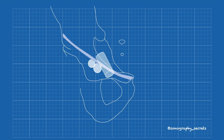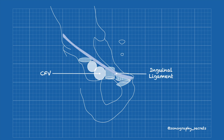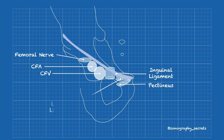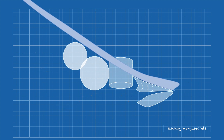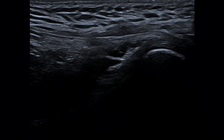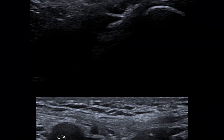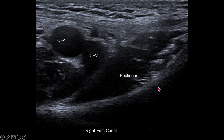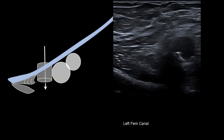For femoral hernias, again, the identification of landmarks is crucial. From our inguinal ligament picture, we move slightly inferiorly, where we can identify the pectineus and common femoral vessels. The femoral canal is located slightly medial to the common femoral vein, and with straining we're looking for movement at this location, which will prevent complete dilation of that common femoral vein. On ultrasound, we identify the inguinal ligament, move slightly inferiorly, and locate the iliopectineal eminence, the pectineus, and the common femoral vein. With straining, we're looking for movement here, as demonstrated in this clip.